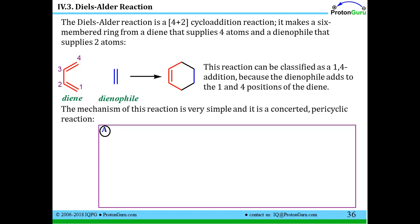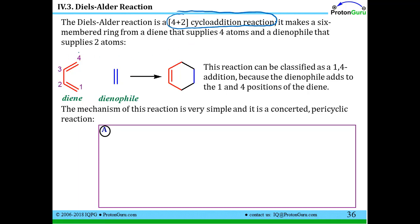The Diels-Alder reaction is what is called a 4 plus 2 cycloaddition reaction. We haven't talked about those types of reactions before. Cycloaddition indicates we're going to add two things and get a cyclic compound. The 4 plus 2 part tells us how many atoms are in the pi-conjugated segments — the pi-bonding segments — that react to make the cycle. So you see there are four atoms here in the pi-conjugated system — that's the 4 — plus the two carbons in that pi bond.